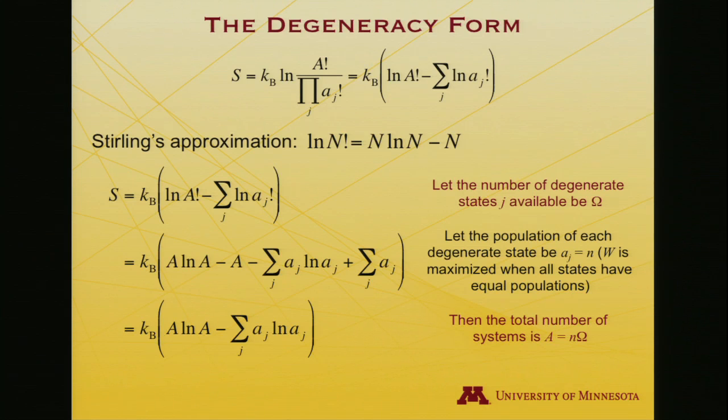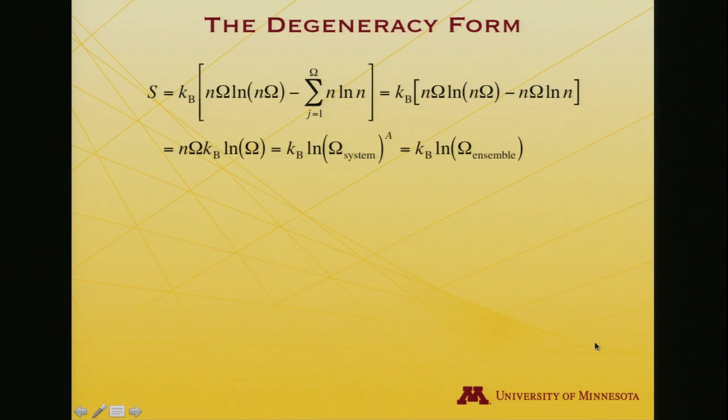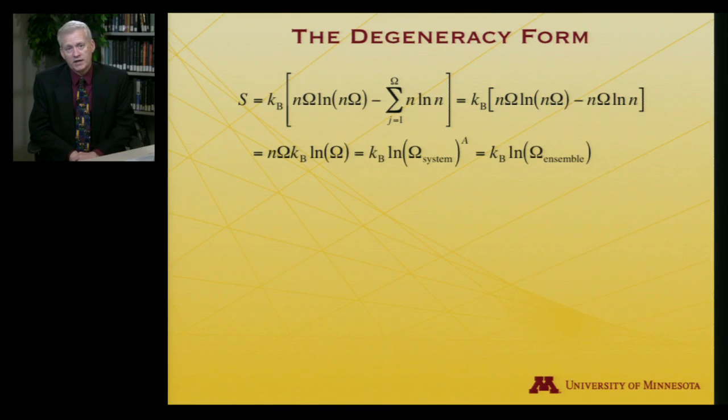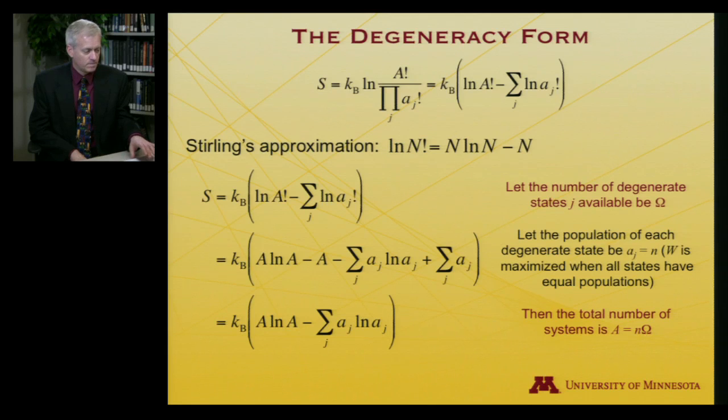And in that case, what is the total number of systems? Well, it's n times the degeneracy. So I'm just going to swap that in. Everywhere I had an A before, I'm going to put n times the degeneracy. And everywhere I had a little a, I've got an n.